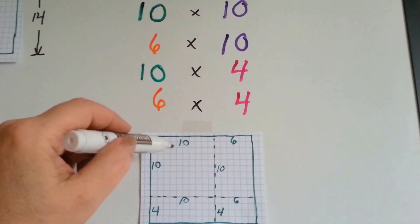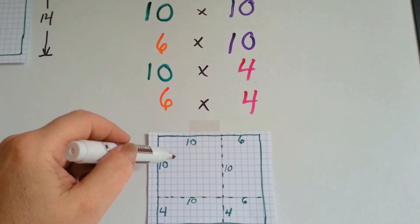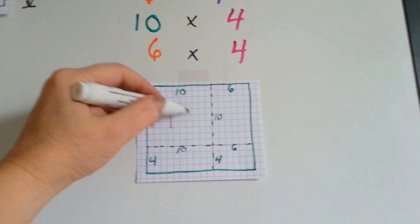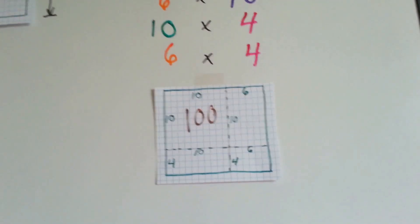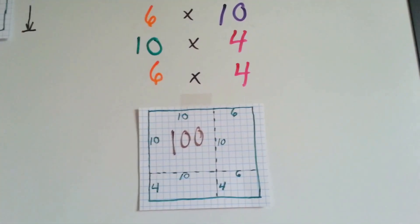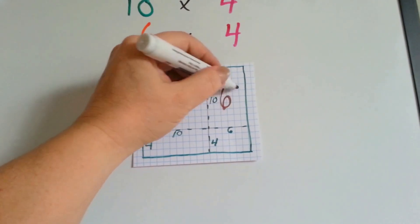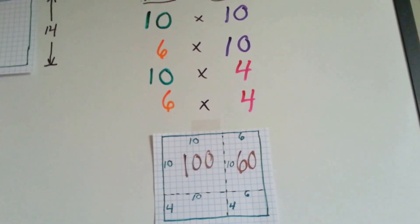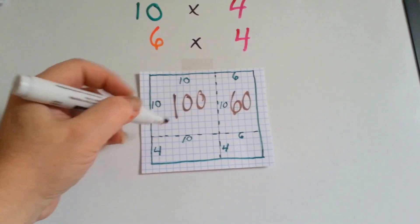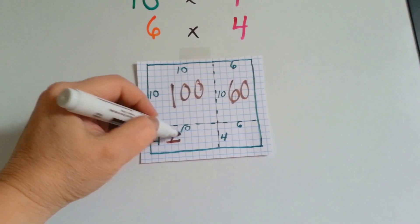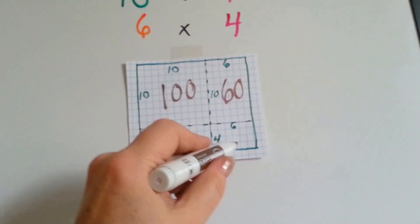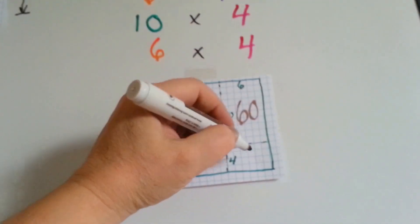Here is our 10 by 10 box right here, the green and purple one. And what is 10 times 10? 10 times 10 is 100. Then we do 6 times 10. That's this one right here. And what is 6 times 10? 6 times 10 is 60. Then we're going to do the 10 times 4, which is right here. And 10 times 4 is 40. Then we're going to do the 6 times 4. That's right here. 6 times 4 is 24.